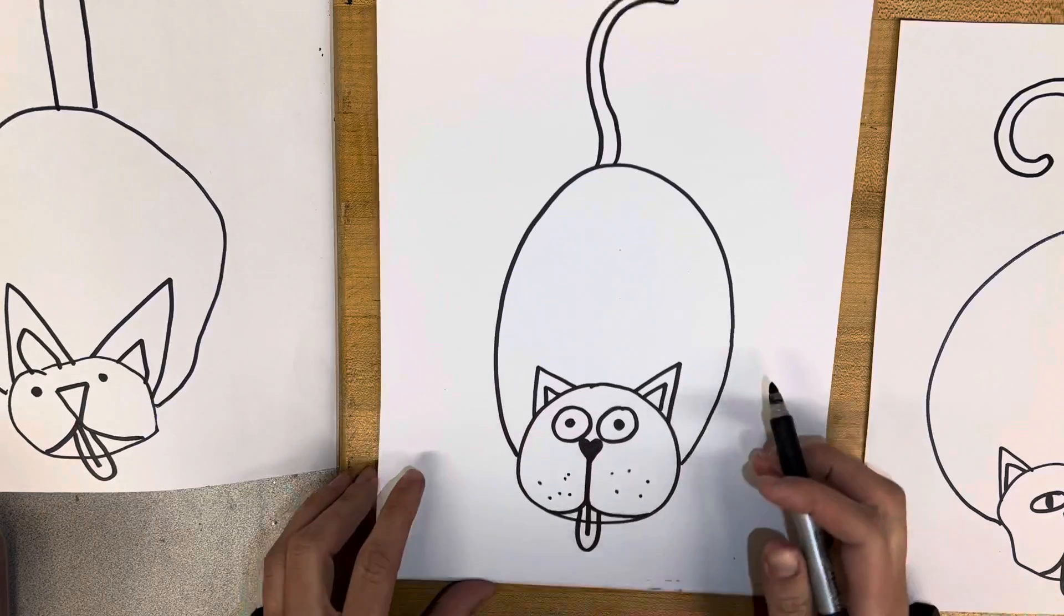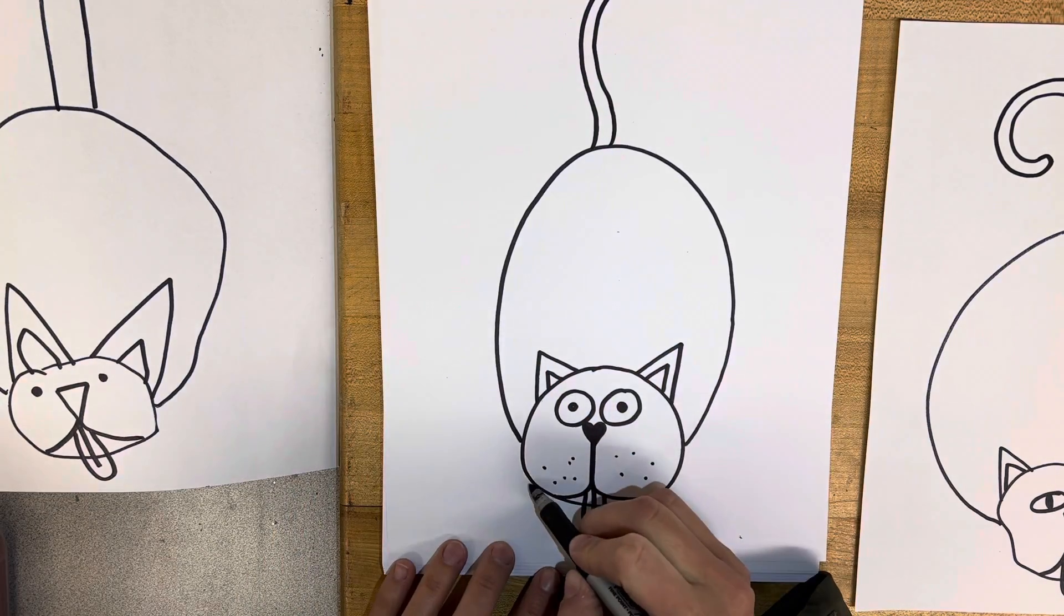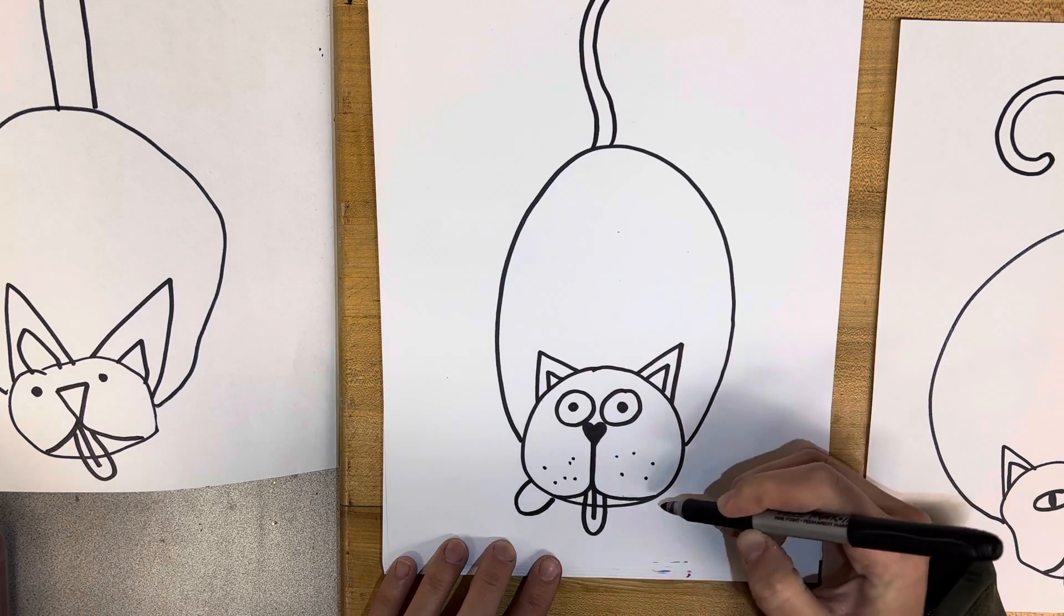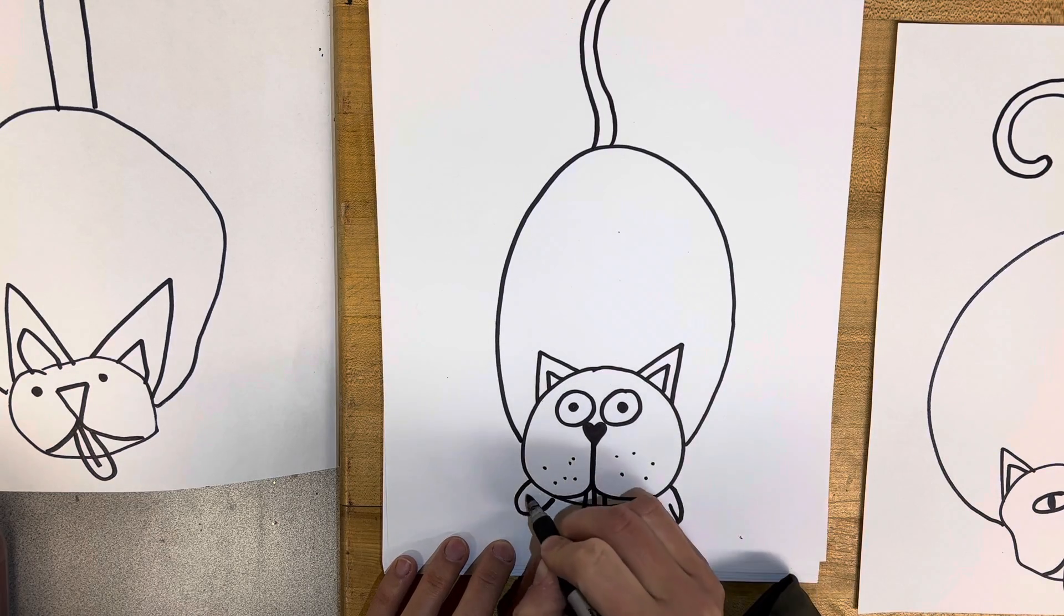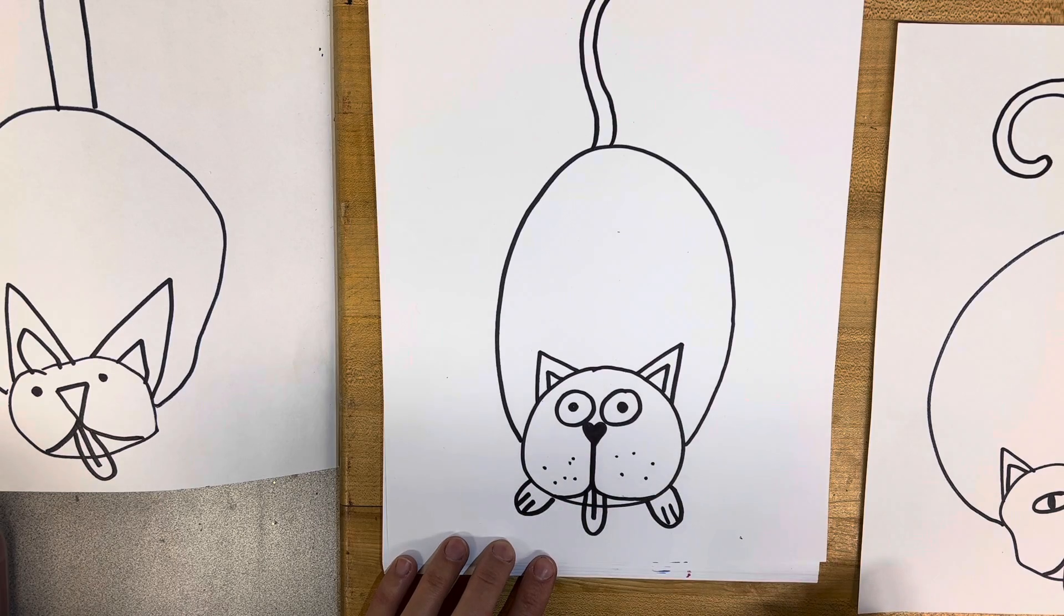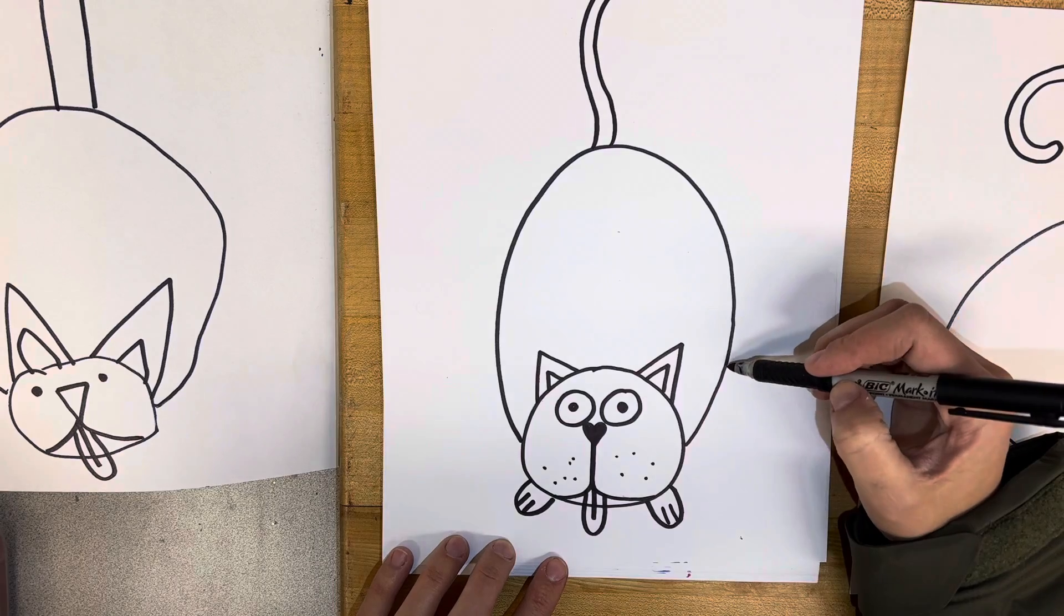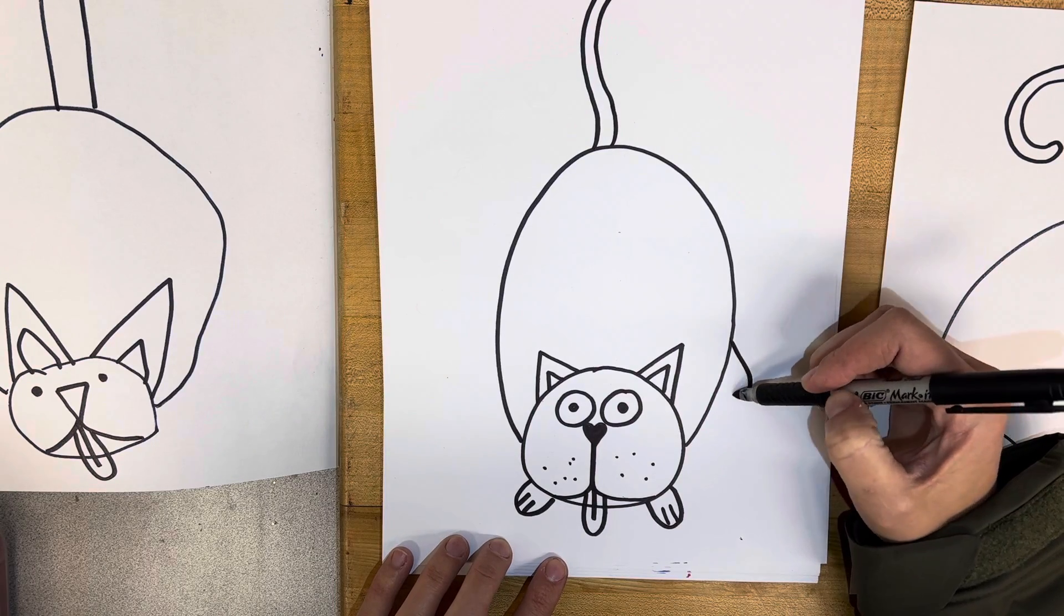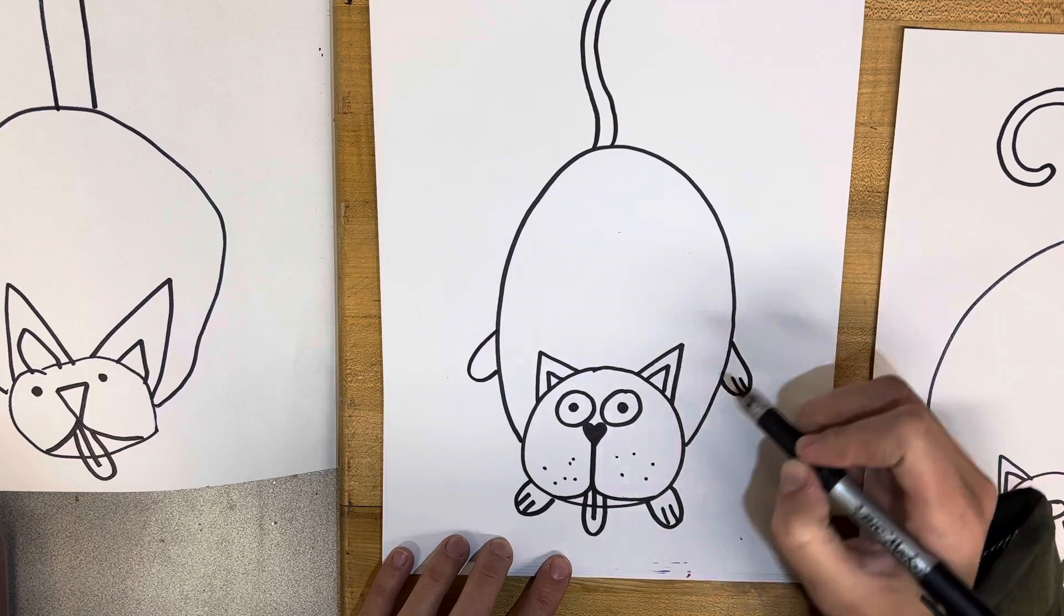The next step is if a kitty's drinking, his little paws are going to be kind of down by his face, right? So we'll just draw two little bumps off the side. And then you can add little lines to make it look like a paw. And then we want to show the little back legs too. So you could just keep it simple and do another little bump right here, a little bump right here, and make it look like little paws.